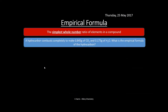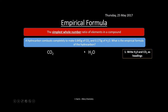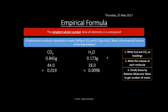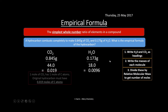We can also determine the empirical formula of a hydrocarbon from its combustion products. Example: a hydrocarbon combusts completely to produce 0.845 g of CO₂ and 0.173 g of H₂O. Write the combustion products as headings, note the masses, then divide by the relative molecular masses (CO₂ = 44, H₂O = 18) to get the moles of each.